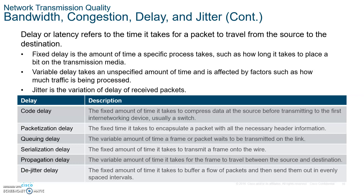Delay is latency — propagation delay. Then we have jitter, which is the variable delay. For example, if the whole class shows up 10 minutes late every day, that's a consistent delay — we can adjust to that easily. But if we have jitter, some days we're late five minutes, other days ten, other days fifteen, some days not at all. That's more difficult to handle. So what we do is put packets in a buffer and then send them out in a nicely synchronized manner.